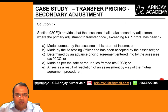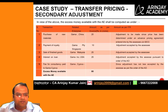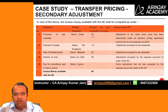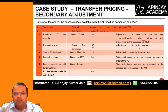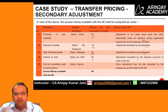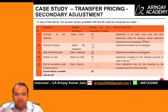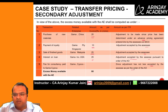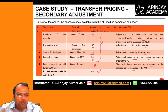Summarizing all adjustments: purchase of raw material — no adjustment since APA price matches ITR; royalty payment — 10 crores (accepted by assessee); sale of finished goods — 25 crores (AO adjustment accepted); interest on loan — 25 crores (AO adjustment accepted); fee for consultancy — nil (not accepted, under appeal). Total secondary adjustment = 80 crores.